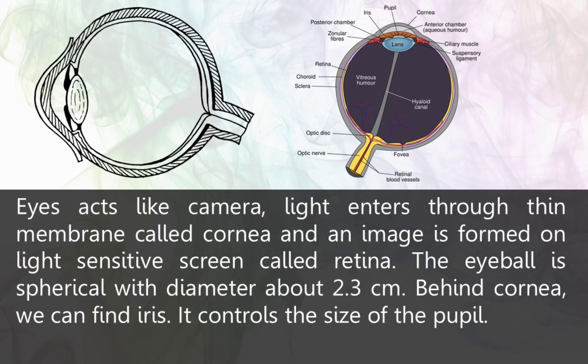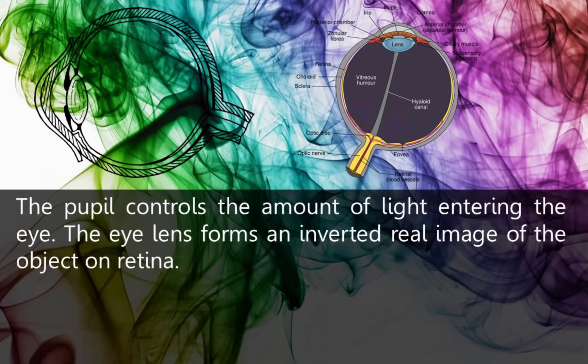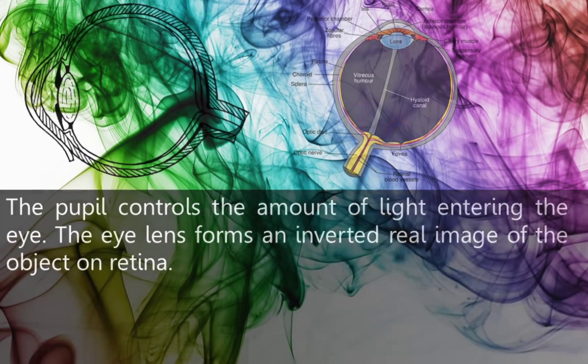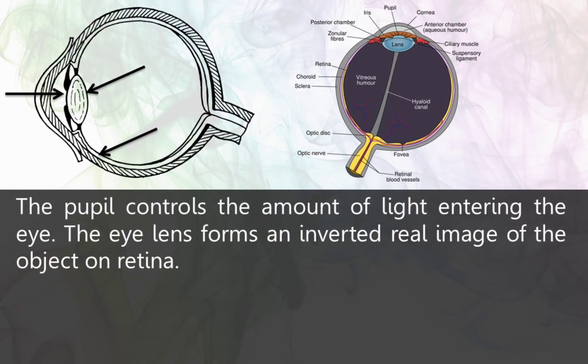The iris controls the size of the pupil — that means the increase or reduction of the size of the pupil depends upon the iris. The pupil controls the amount of light entering the eye. The eye lens forms an inverted, real image of the object on the retina.